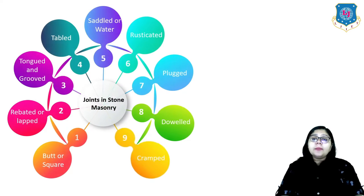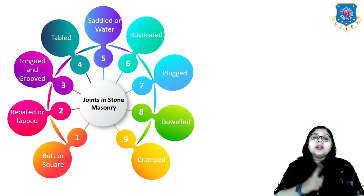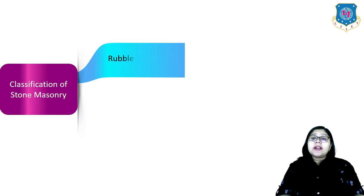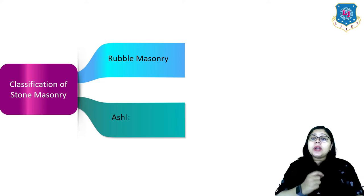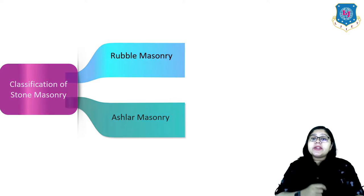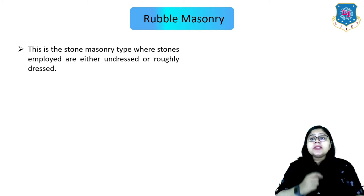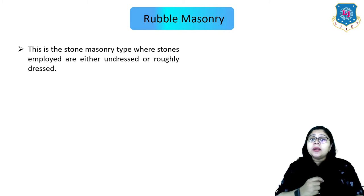With this we have completed all the joints used in stone masonry. Now let us talk about the classification of stone masonry, which is classified into two types: the rubble and the ashlar. Rubble masonry is the type where stones employed are either undressed or roughly dressed.